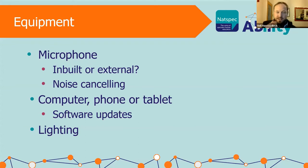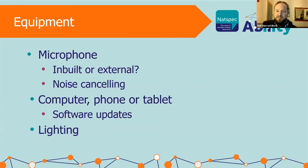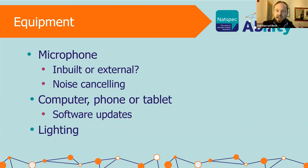With the microphone, you can have inbuilt or external — noise-cancelling is really useful. Think about keeping your computer, phone or tablet updated with software updates, because that's where new features are brought in. Also get the lighting right. When people are using captions the best way to communicate is for people to be able to see your lips moving, see the text on the screen, and hear the audio clearly — it gives the best chance possible of communicating what you're saying.